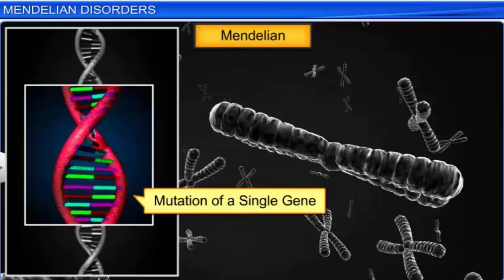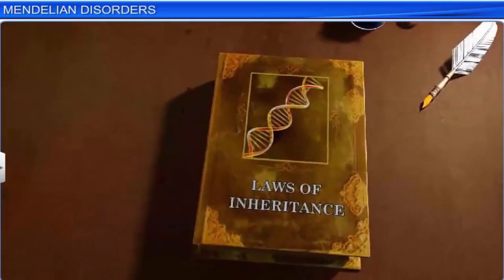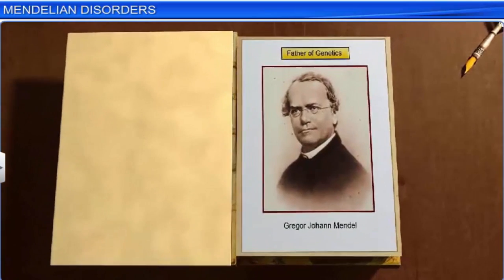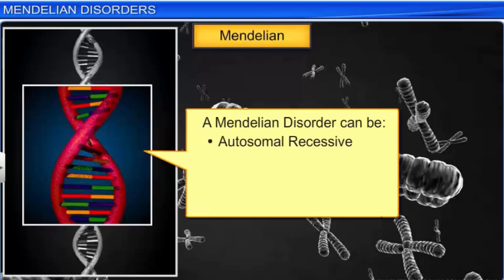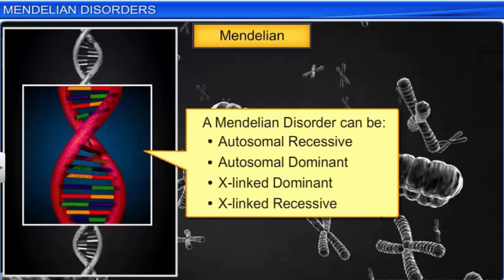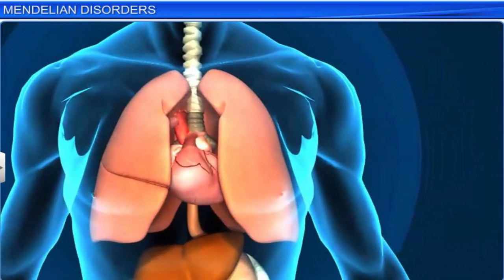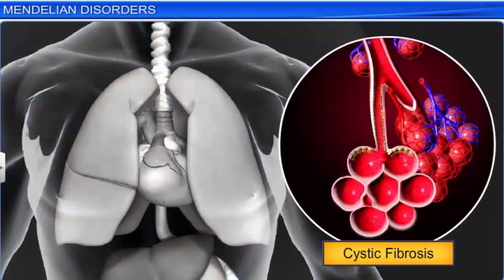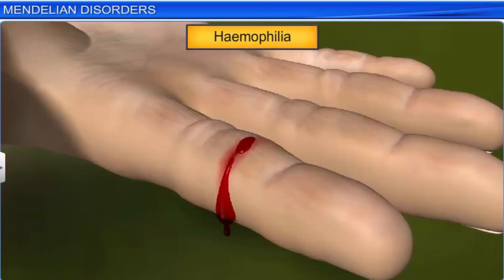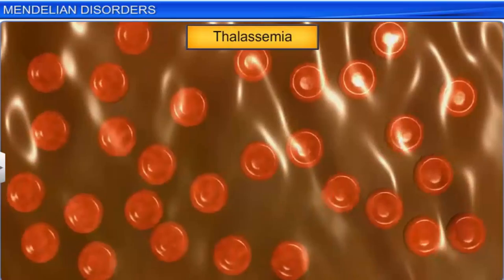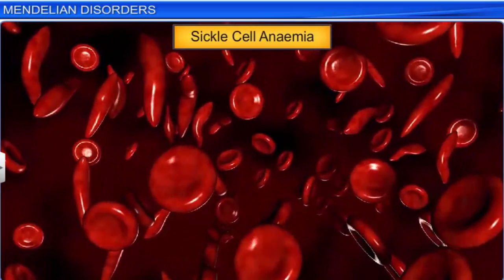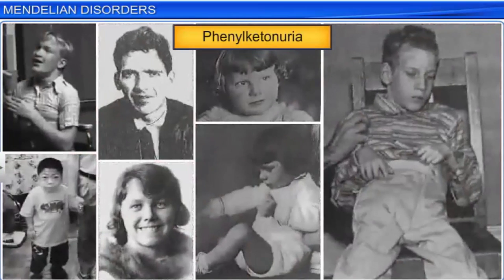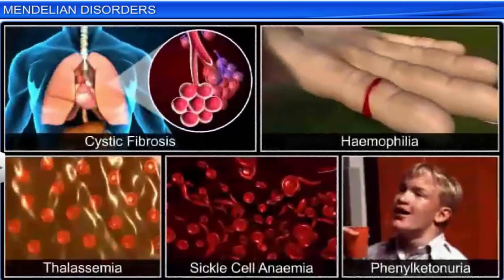The mutated genes that cause Mendelian disorders follow the laws of Mendelian inheritance. These disorders can be autosomal recessive, autosomal dominant, X-linked dominant, or X-linked recessive. Some Mendelian disorders are cystic fibrosis, haemophilia, thalassemia, sickle cell anemia, and phenylketonuria.